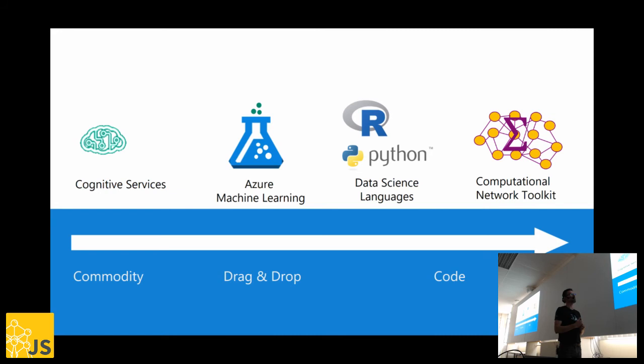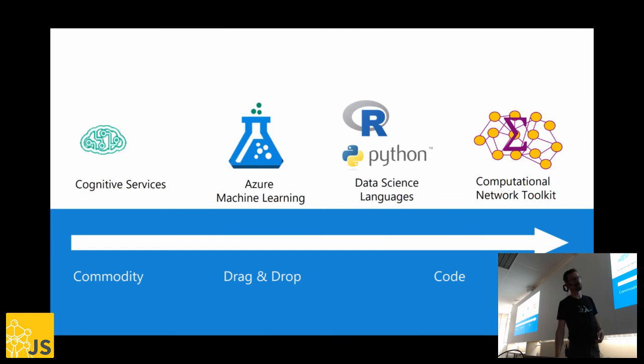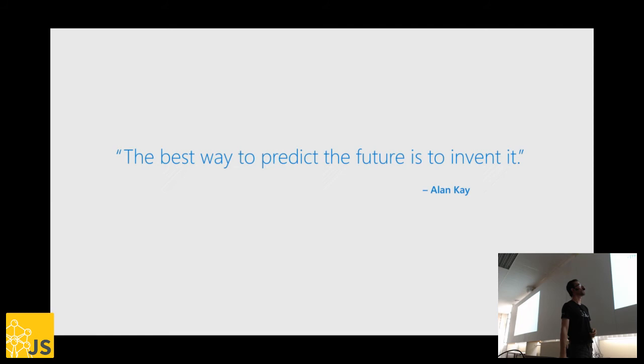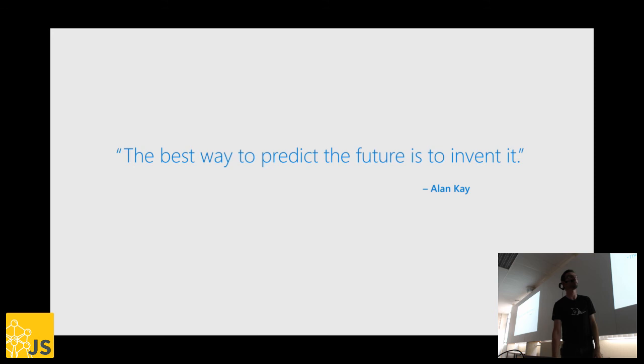You can see how we can leverage complex Azure Machine Learning models easily by exposing them as REST APIs and integrating them into existing JavaScript programs. There are cognitive services as commodity ready-made AI, machine learning for drag-and-drop model creation, and more advanced coding technologies as well — all integrable via REST APIs. The best way to predict the future is to invent it — check out microsoft.com/AI for all our AI solutions. Thank you for your attention.